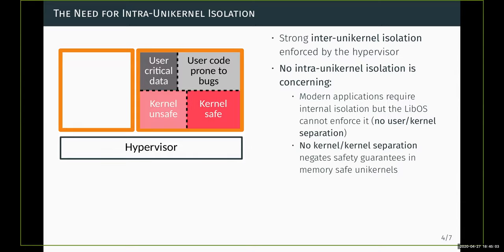There are also unikernels written in memory-safe languages, which gives them very nice security properties. But they all rely on sometimes significant parts of unsafe code — for example, C code to implement the OCaml runtime that goes with MirageOS unikernel. Some Rust unikernels have been written too and they contain unsafe code. So there may be a need for kernel-level separation between safe and unsafe code.